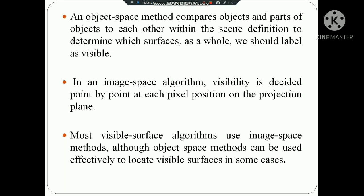But in the case of the image space method, the visibility is decided point by point at each pixel position on the projection plane. In that projection plane, there are individual pixel positions. This is the image space method.